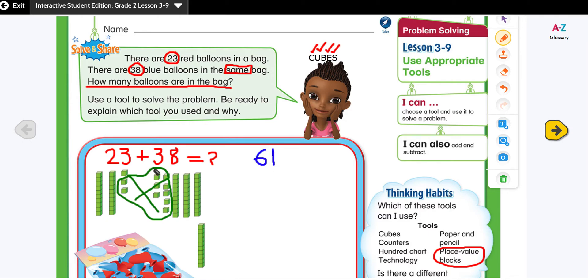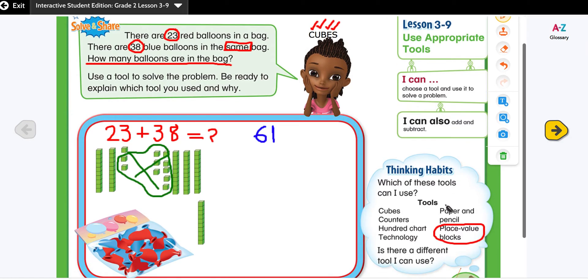23 plus 38 gives me 61. Why I use the base 10 blocks? Because the place value blocks help me visualize the problem. I can count the tens, I can regroup the 10 ones into one 10, and I can replace it with the tens and I can count them. So that was the first tool that we used.